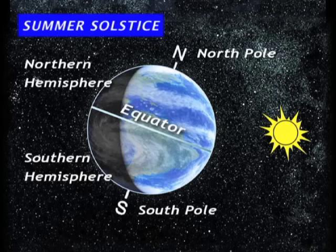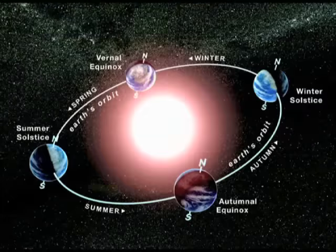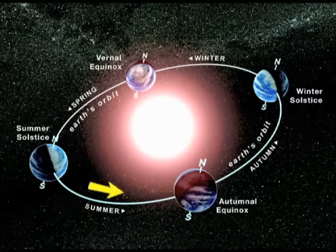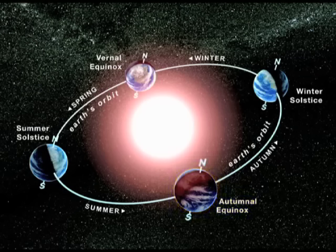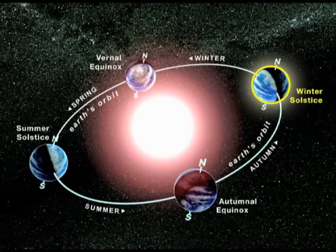These extra hours of sunlight give the sun more time to heat the Earth. This is the main reason that summer is the hottest season. As the Earth continues its orbit, it reaches a point where it's tilted sideways to the sun. This is called the autumnal equinox. Both the day and the night are the same number of hours. The Earth reaches the other side of the sun on the shortest day of the year, the winter solstice. This is the first day of winter, and the Northern Hemisphere is tilted farthest away from the sun.